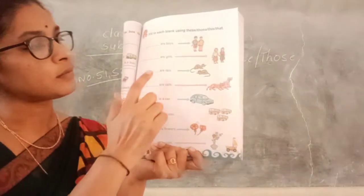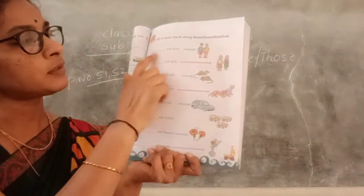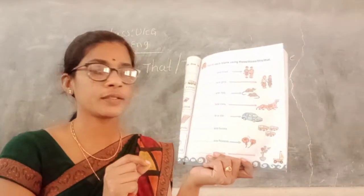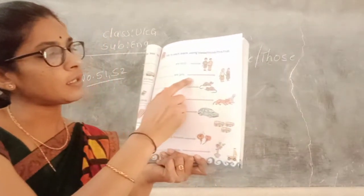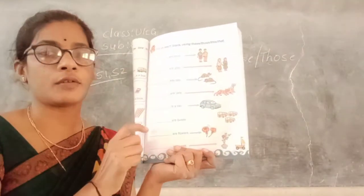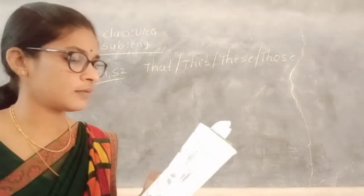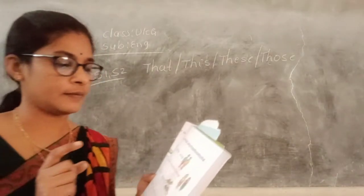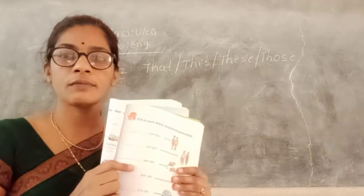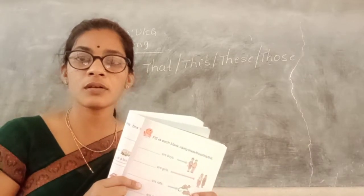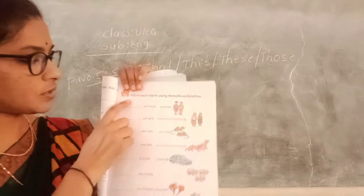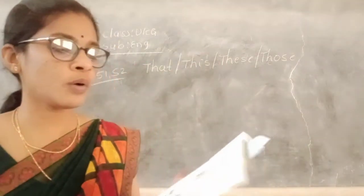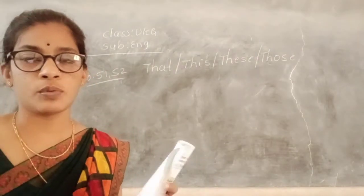Look here children. When blue colors are near — look at the pink color line, there are four pink lines. When things are near to us and more than one, we use 'these.' These are boys. Look at your textbook.